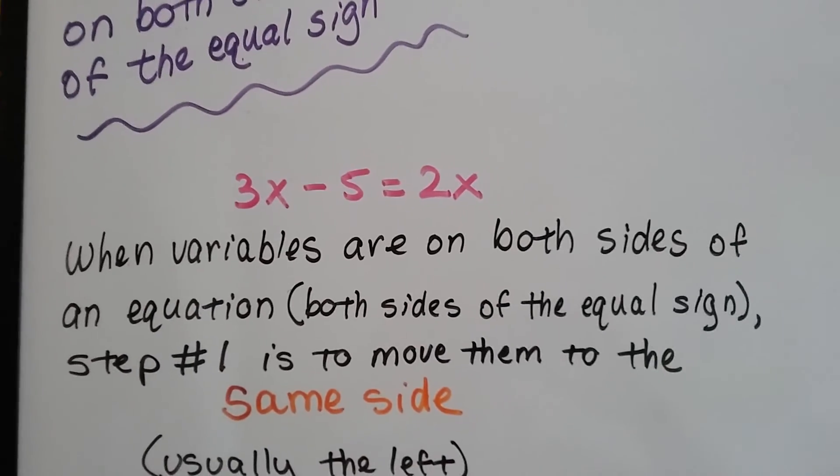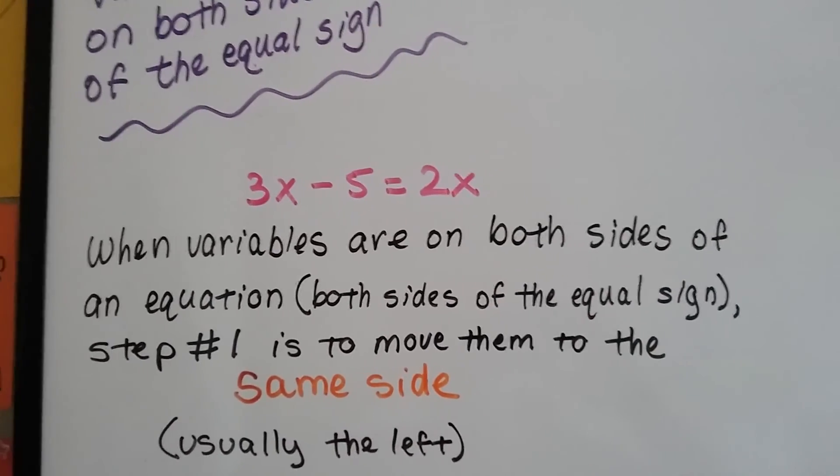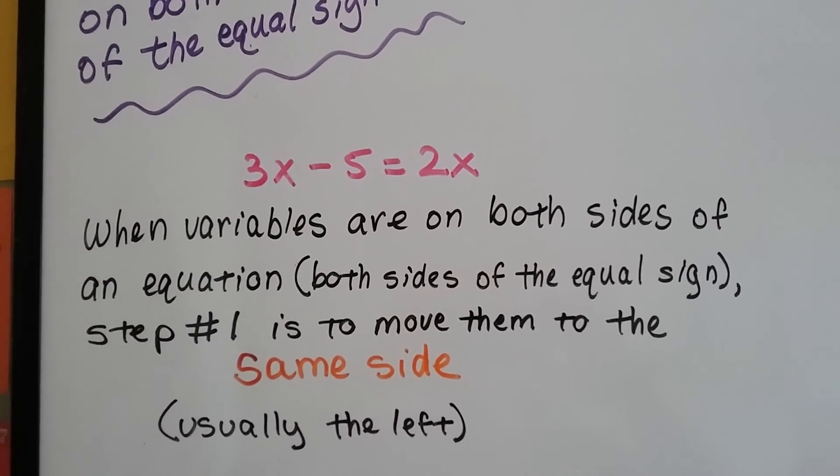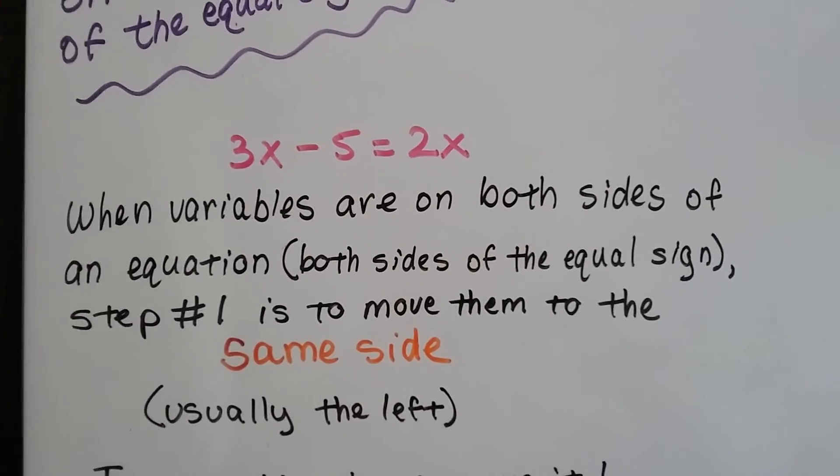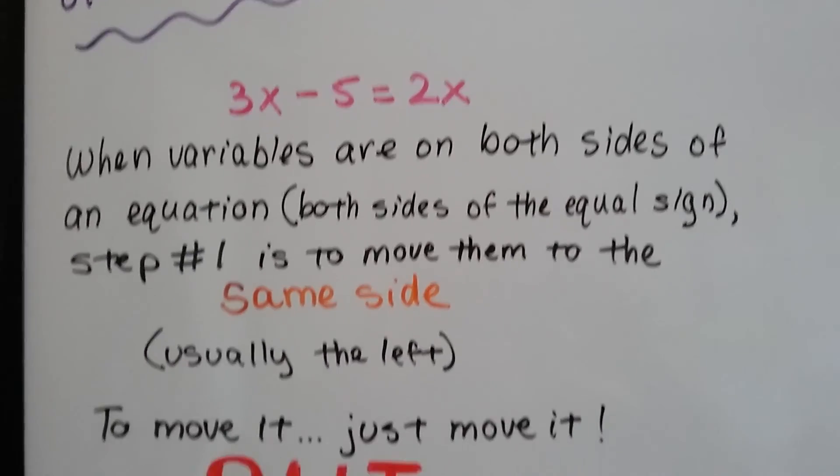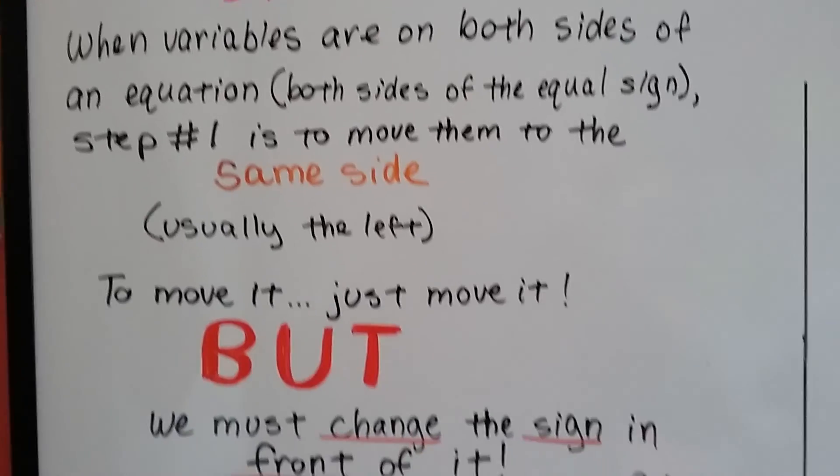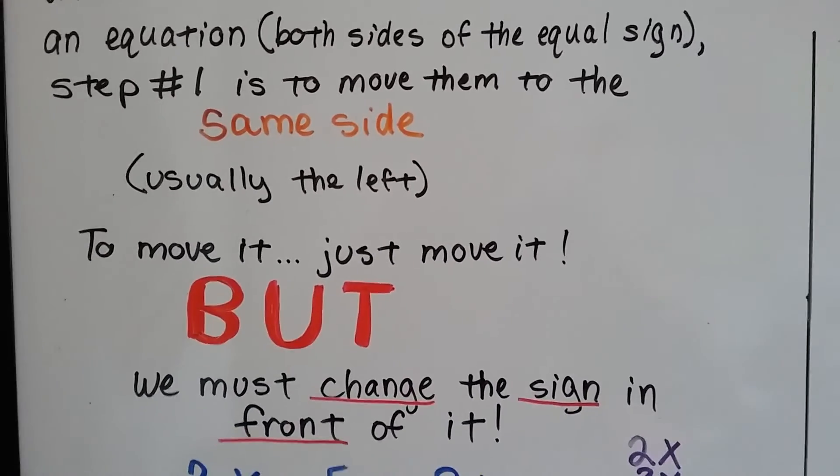When variables are on both sides of an equation, both sides of the equal sign, the first thing we need to do, step one, is to move those variables to the same side. Usually to the left, but they can go to the right. So to move it, we just move it. But we must change the sign in front of it.